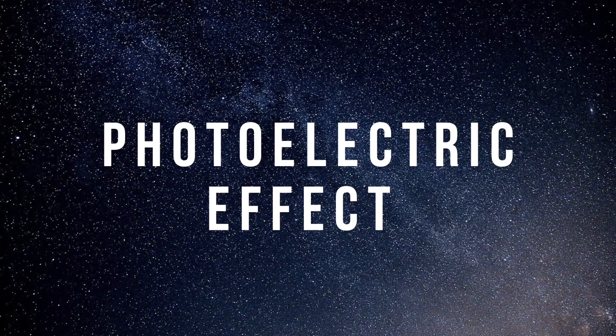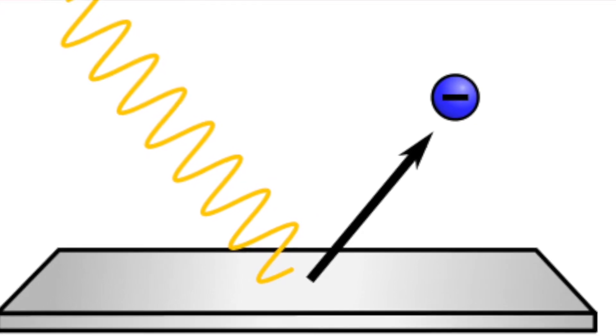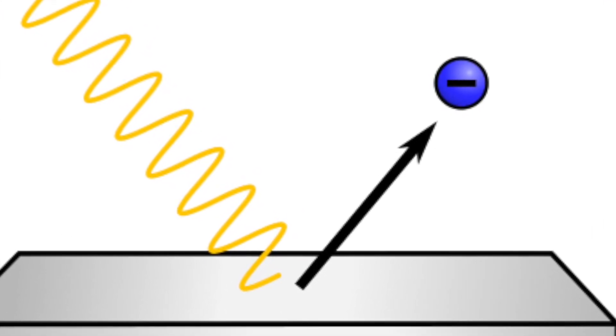Either way, from a high level CMOS and CCD cameras work the same way. They work based on the principle of the photoelectric effect. The photoelectric effect basically states that when electromagnetic radiation such as light hits a material like a metal, it will emit electrons. That principle is used to convert light into a voltage, and then the voltage is recorded as data in your file.